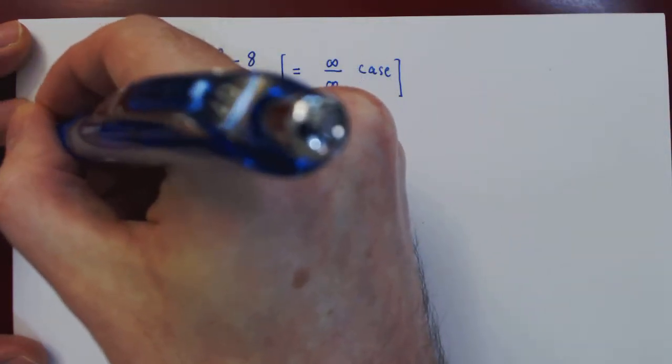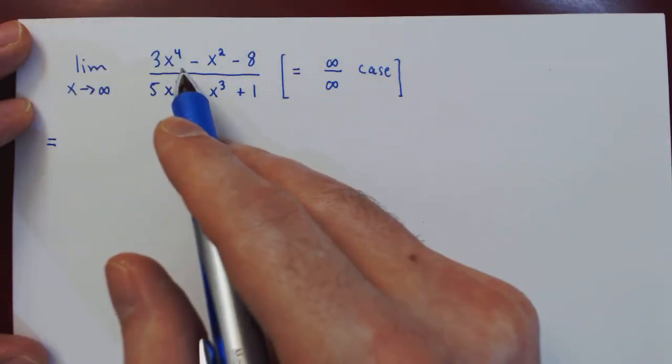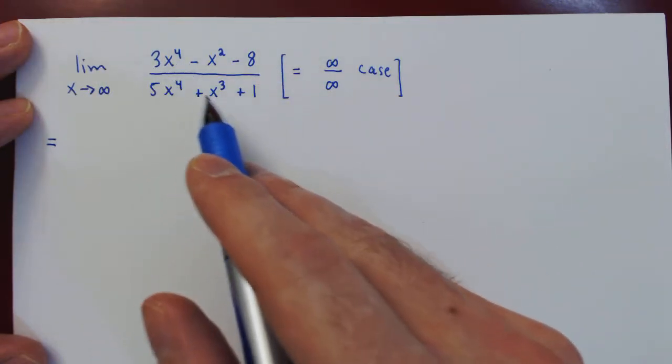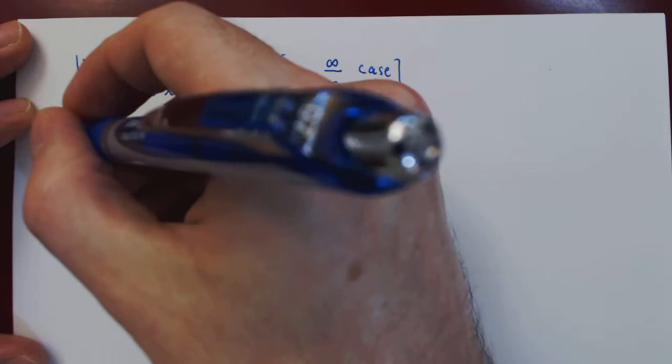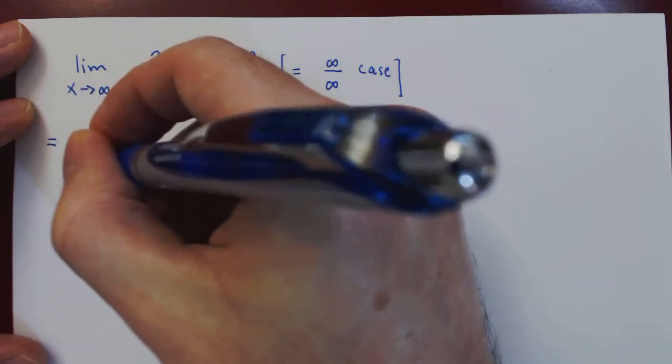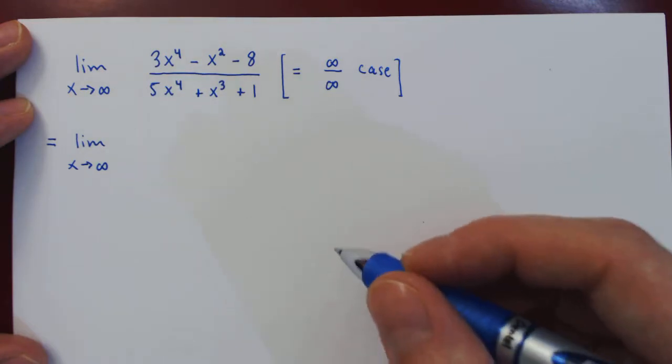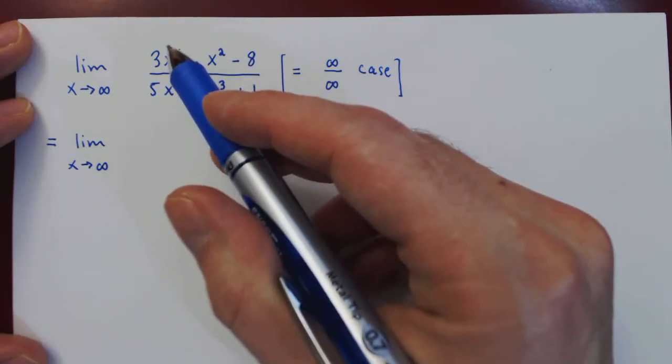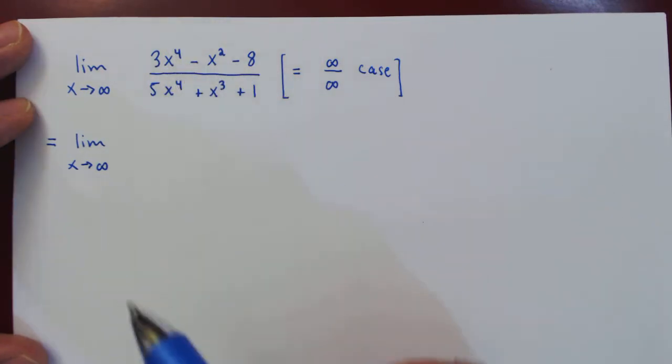But we can easily fix this problem by simply factoring x^4 from the numerator and denominator. Again, we are factoring x^4 because it is the largest power of x, therefore by far the largest term in the expression.